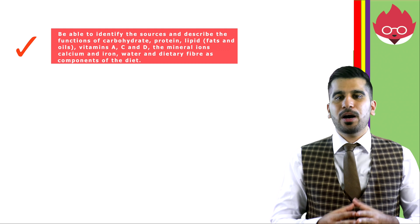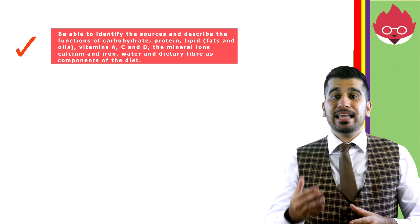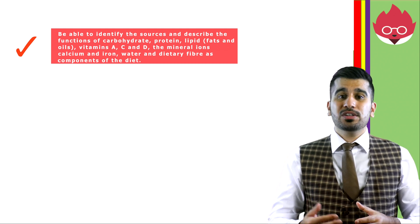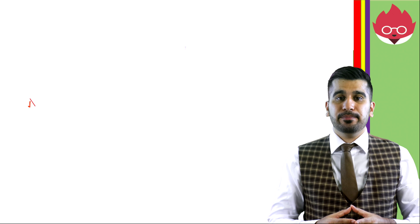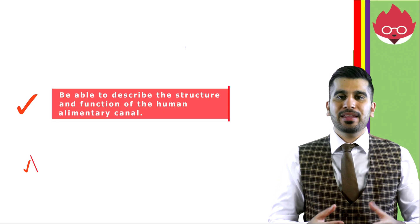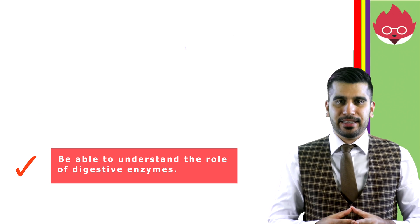By the end of this lesson, you should be able to identify sources and describe the function of carbohydrates, proteins, lipids, vitamin A, C and D, mineral ions calcium and iron, water and dietary fiber as components of a diet. Be able to describe the structure and function of the human alimentary canal, and be able to understand the role of digestive enzymes. In our next lesson, we will be looking at the process of respiration.